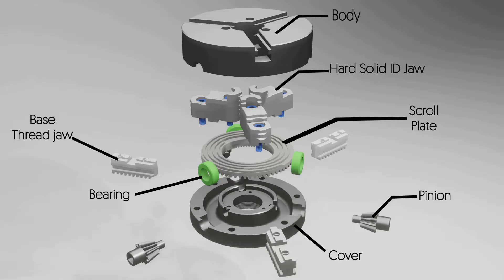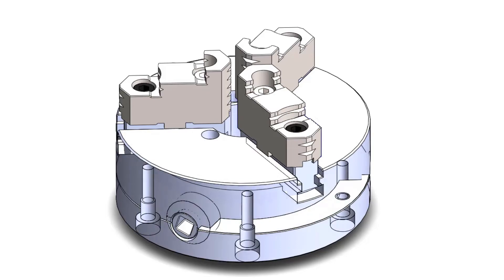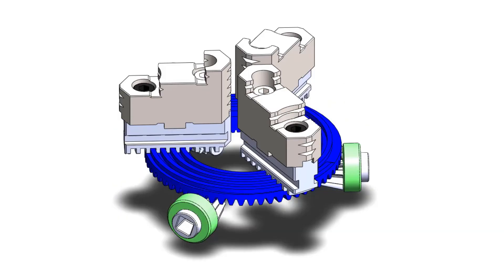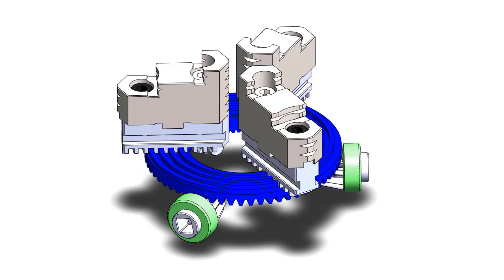Now let's talk about how this mechanism works. When the pinion gear rotates, it rotates the scroll plate. As you can see, the scroll plate has gears on the lower surface.